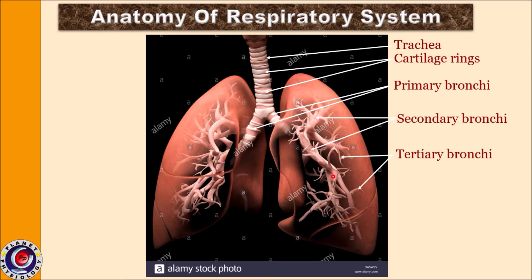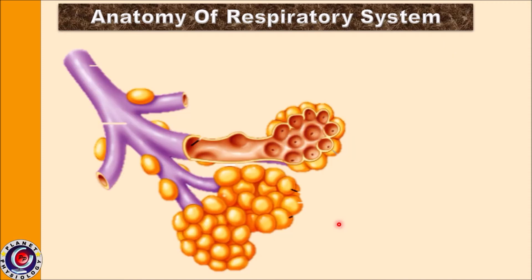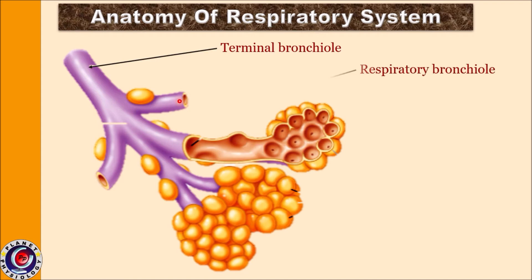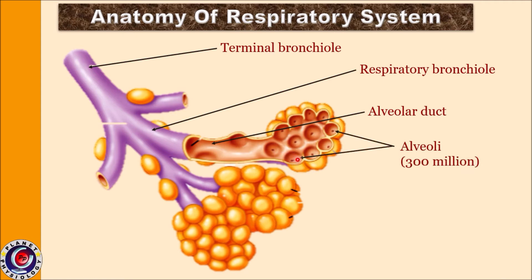The secondary bronchi in turn divide and re-divide to form tertiary bronchi, which then divide to form terminal bronchioles — the term bronchioles is used because they are very small in diameter. Terminal bronchioles give rise to respiratory bronchioles, which form alveolar ducts. Each alveolar duct ends in a blind sac called an alveolus, and a group of alveoli bunched together is called an alveolar sac. Many such alveolar sacs ultimately form the lungs.